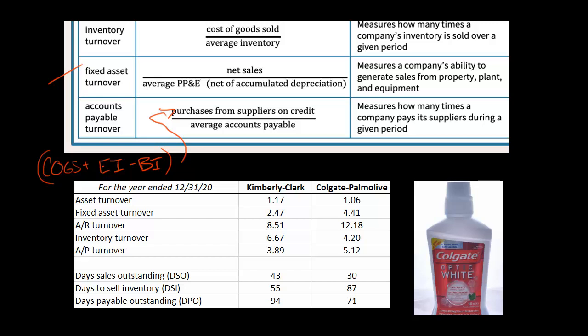In terms of selling the inventory, Kimberly-Clark is able to sell it a lot faster than Colgate-Palmolive, which is very important for cash management. Now, days payable outstanding is different: while you want to collect from customers quickly and sell inventory quickly, with days payable outstanding you don't necessarily want a low number — actually, the higher the better, within reason. You can't just never pay your suppliers; they'll eventually stop sending you inventory on credit. But delaying payment to vendors can actually be a good financing strategy.